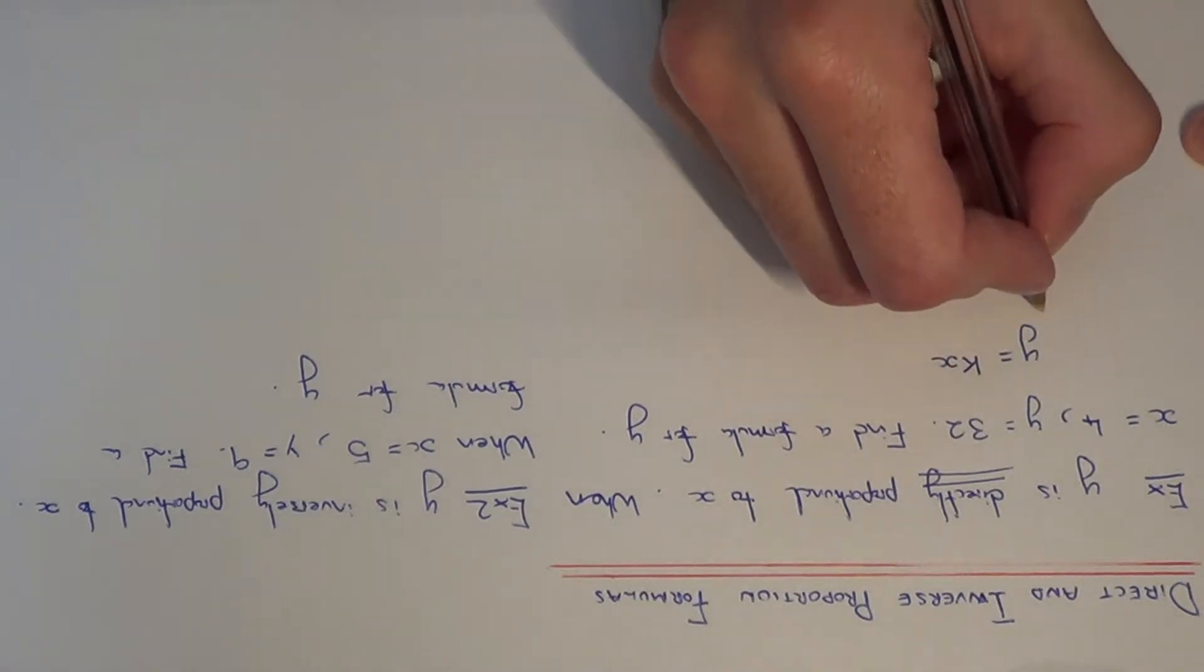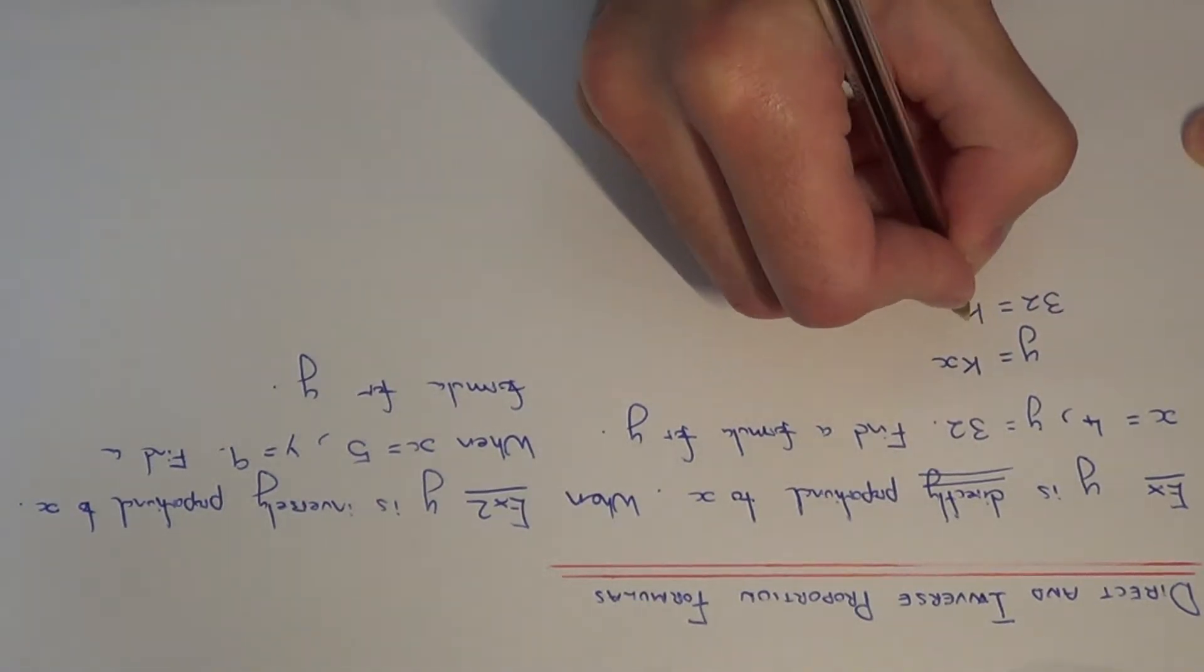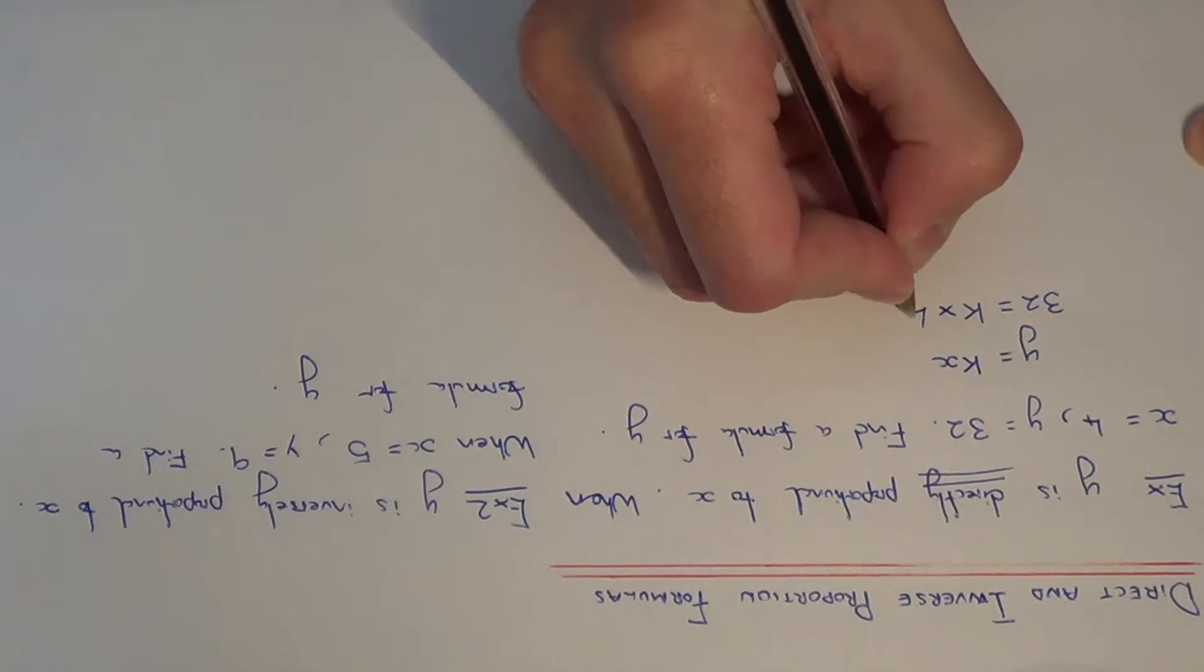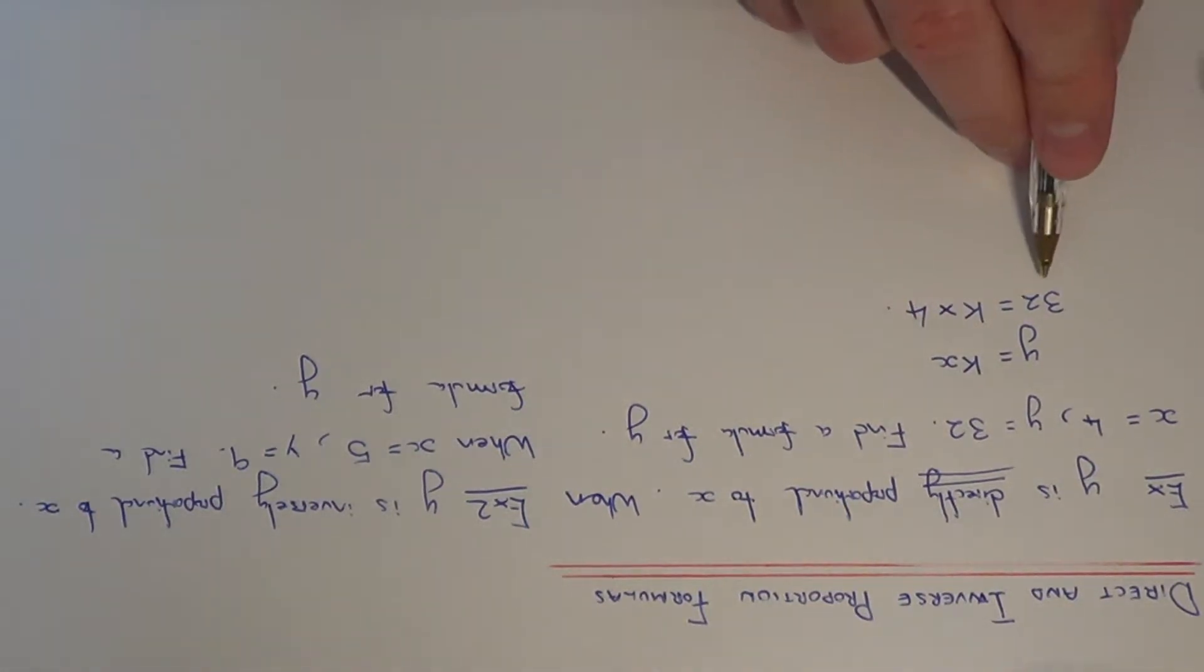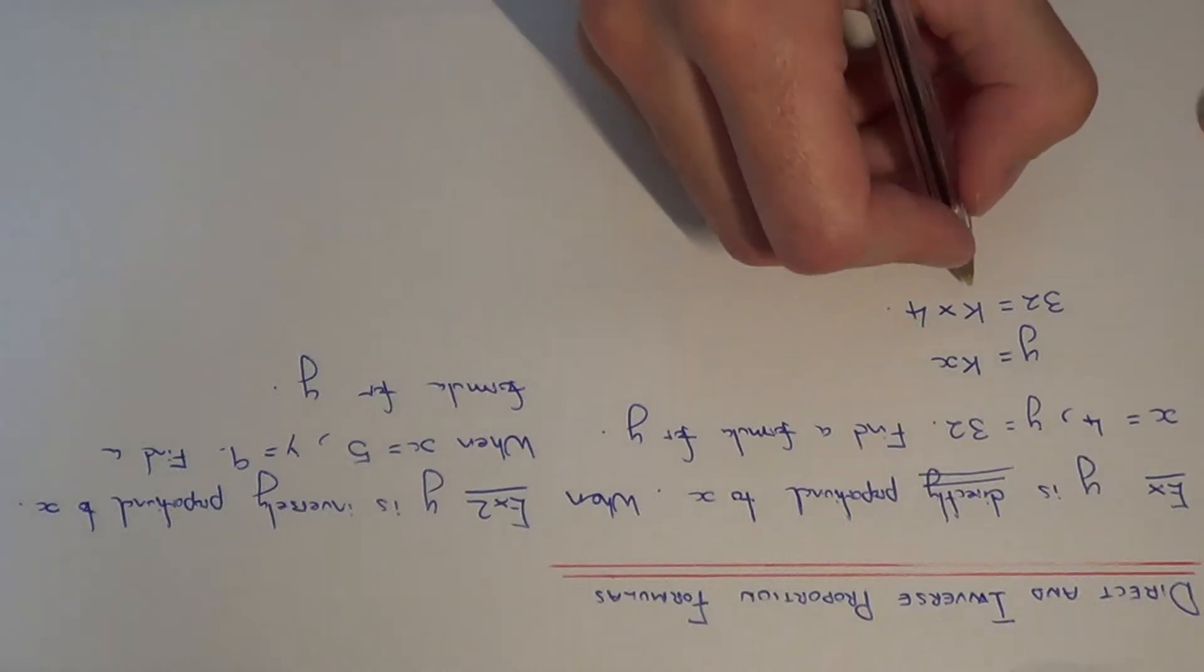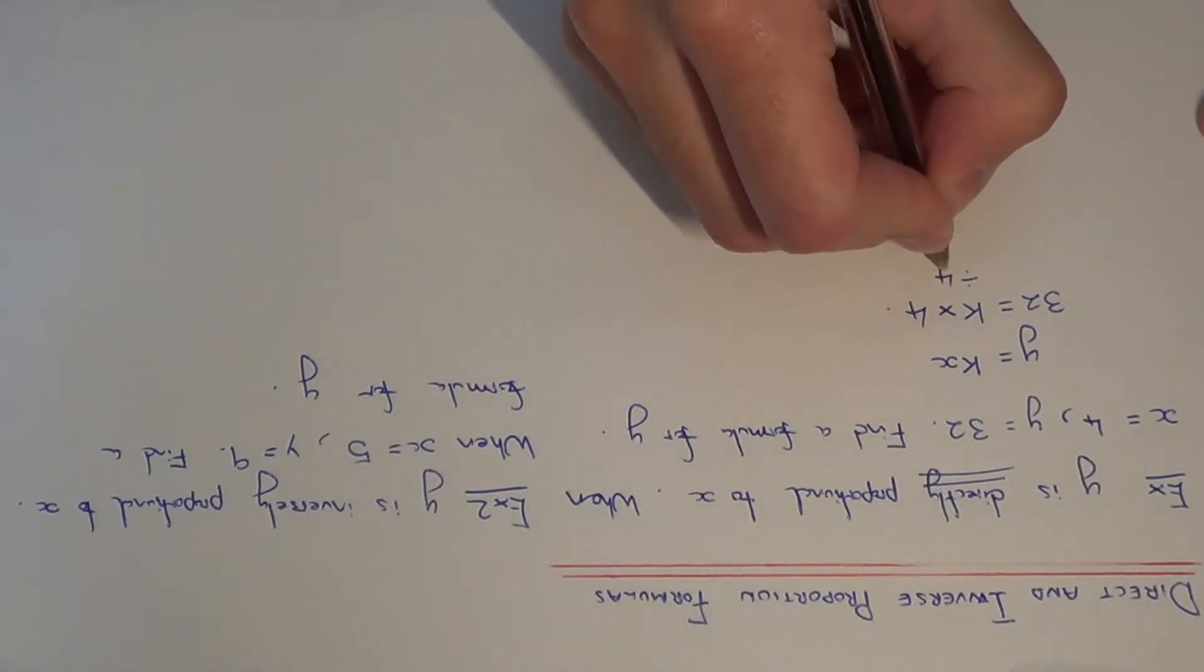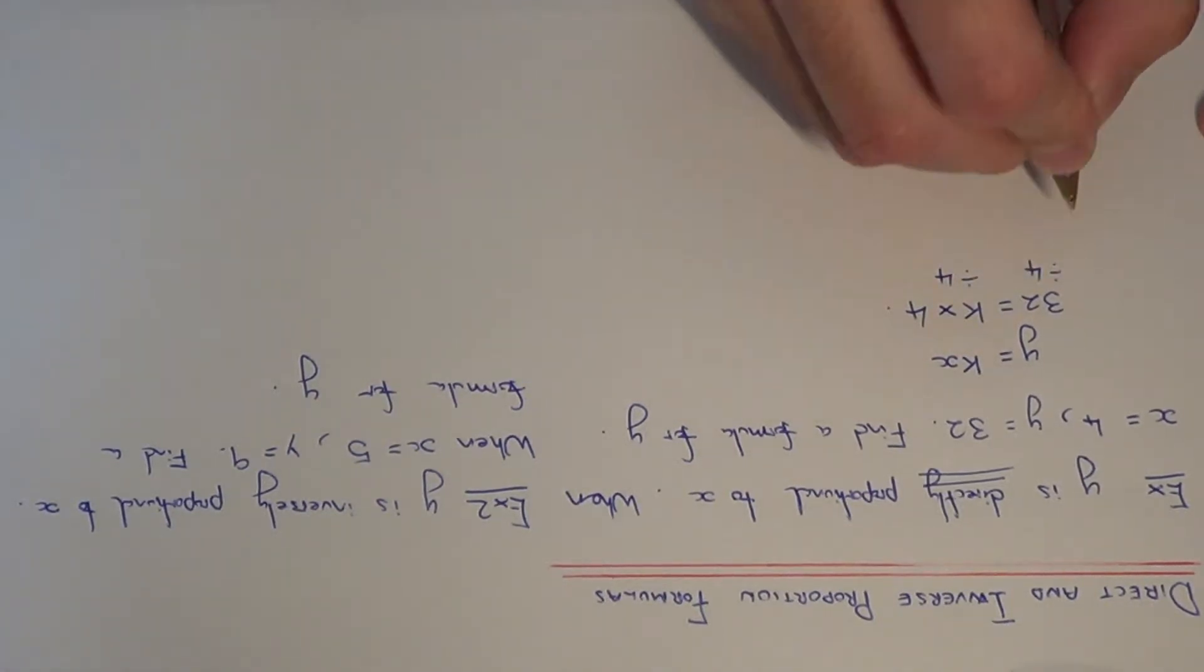We know that y is 32 and x is equal to 4, so we end up with 32 equals k times 4. To work out k, I need to get rid of the times by 4. The opposite of times by 4 is to divide by 4. So 32 divided by 4 is 8, and this gives me the value of k.